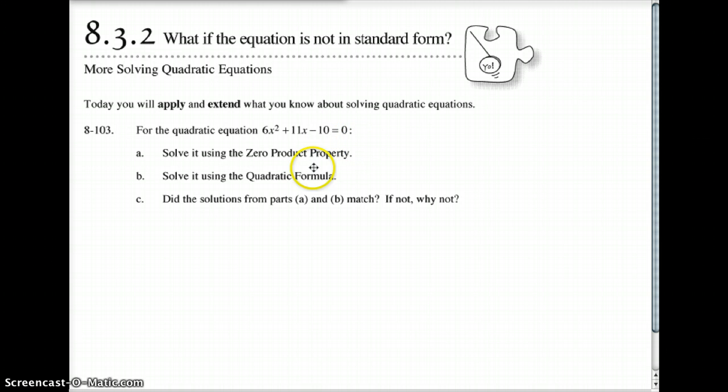and you are going to solve it first using your zero property product. Basically what I mean by that is you're going to use your diamond and rectangles, generic rectangle and a diamond problem to solve it, and then you're going to solve it using quadratic formula. Now, I want you to figure out which did you like better, which was easier to do. So first you're going to do that. Pause the video as you solve it both ways. I want to see all your work on that.